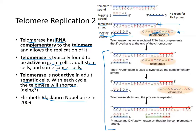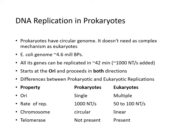The telomere is replicated by telomerase, which possesses RNA sequences to provide the 3' end. In prokaryotes, DNA replication is simpler — E. coli has only about 4.6 million base pairs and all genes can be replicated in about 42 minutes, at about 1,000 nucleotides per second. It also starts at an origin of replication and proceeds in both directions.